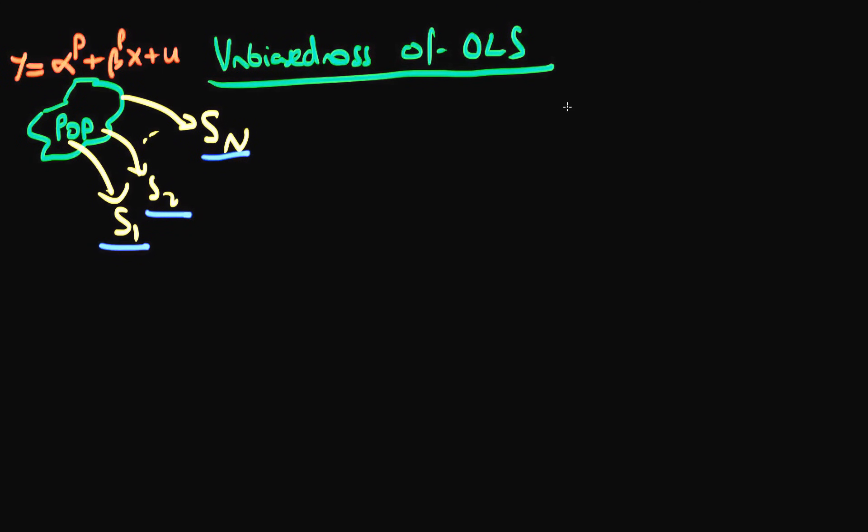then the idea is that by applying my estimator to each of these samples I am getting an estimate of the population parameter beta p, or we could be thinking about alpha p as well, but in this video we're going to be talking about beta p.